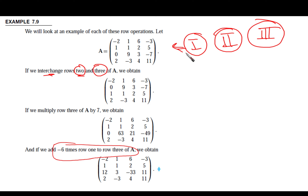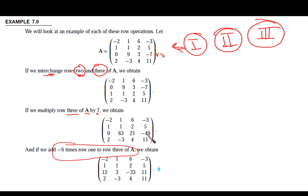For Type 2, suppose we multiply row 3 of A by 7. Row 3 has entries 0, 0, 9, 3, −7. Multiplying by 7 gives: 0, 0, 63, 21, and −49. This is elementary row operation Type 2.